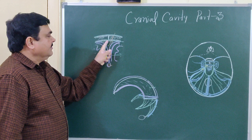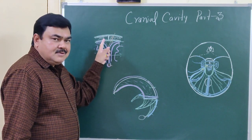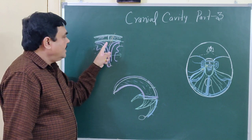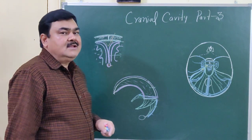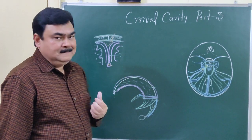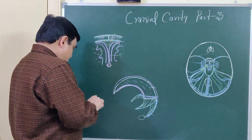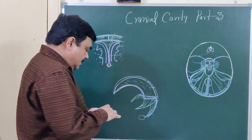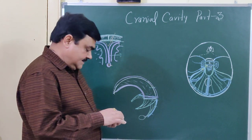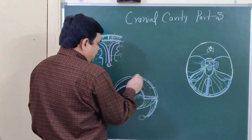This is a Dural Venous Sinus. The Dural Venous Sinus is formed by fibrous tissue — it has no muscles. This Dural Venous Sinus has no valves. There are some paired and some unpaired Dural Venous Sinuses.